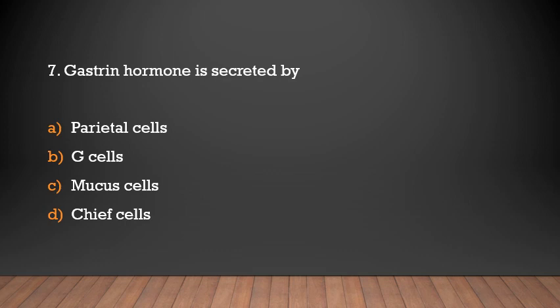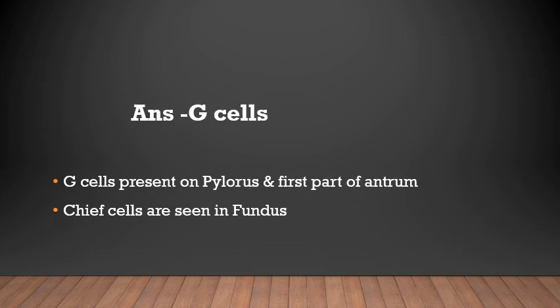Gastrointestinal hormone gastrin is secreted by: parietal cells, G cells, mucus cells, or chief cells? Answer: G cells. Gastrin is secreted by G cells, which are present in the pyloric antrum. Chief cells are seen in the fundus.